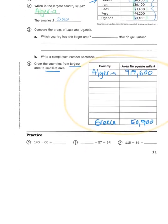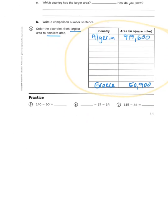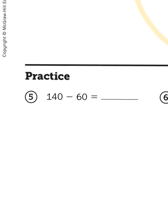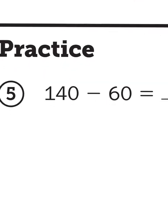Down at the bottom we have some practice problems. Sometimes teachers will forget to point these out, but whenever you see practice problems, these are usually a review of concepts you've already practiced. Let's just try one: 140 minus 60. They wrote that horizontally in number sentence form. It is better if we turn that around and make it an algorithm — vertical.